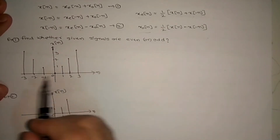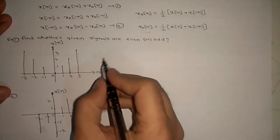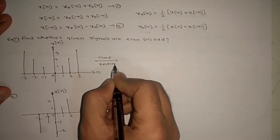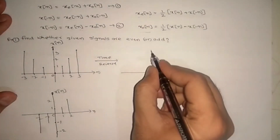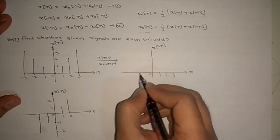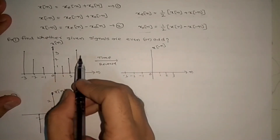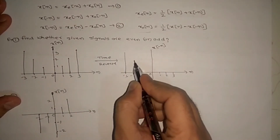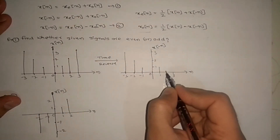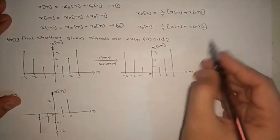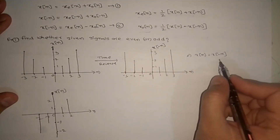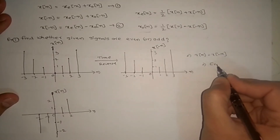Find whether the given signals are even or odd. Here x of n signal is given. Perform time reversal, that is compute x of minus n. The values at n = 0, 1, 2, 3 and minus 1, minus 2, minus 3 are mapped accordingly. So x of n equal to x of minus n — if this condition is satisfied, we will call the given signal an even signal.